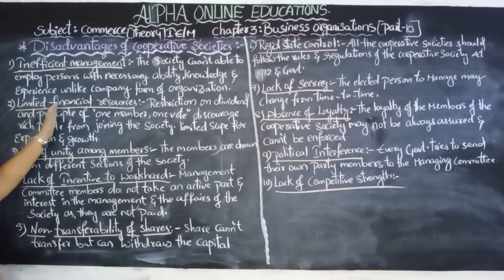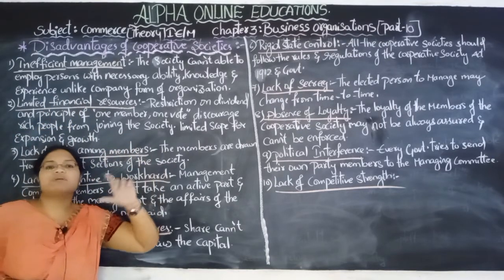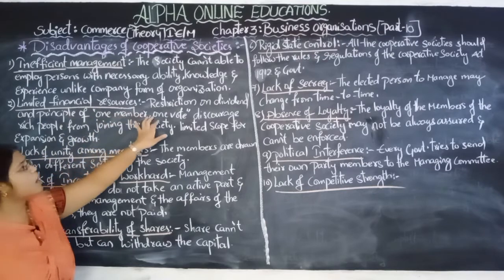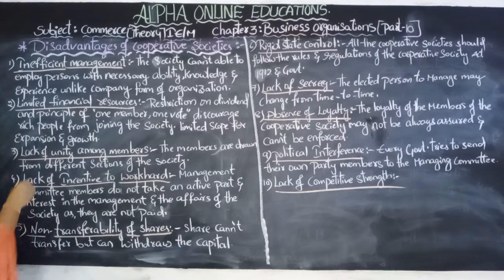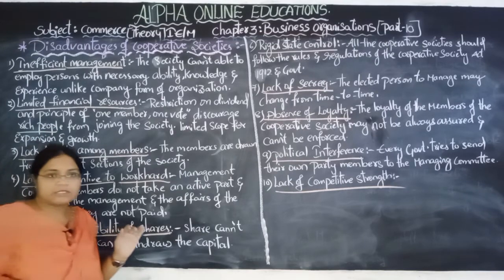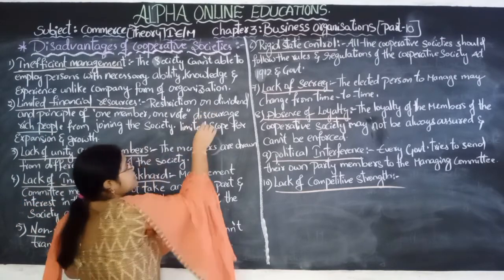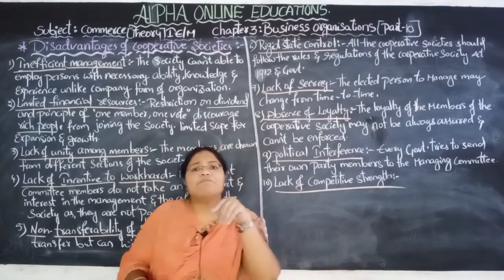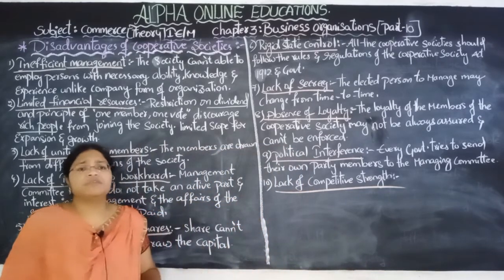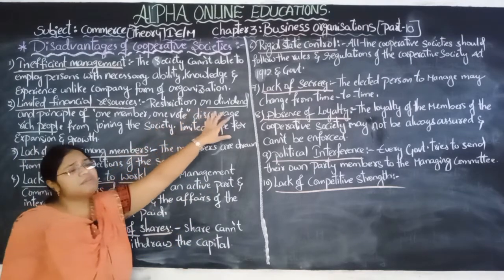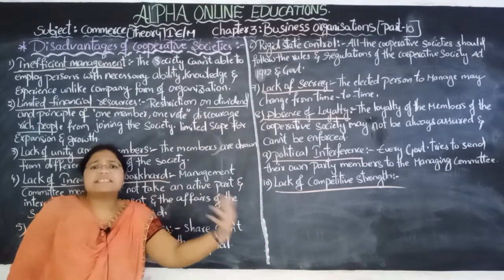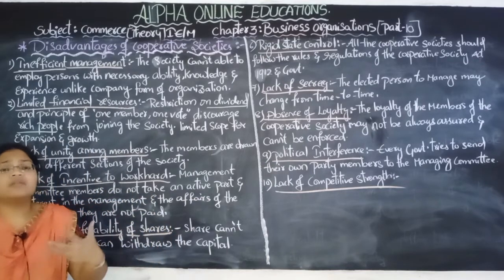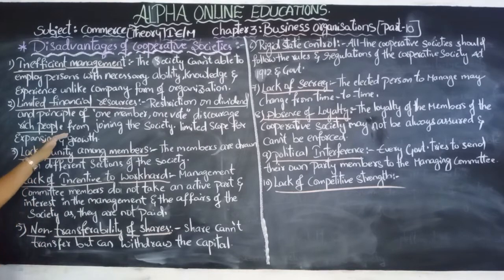The next disadvantage is limited financial resources. The cooperative society has very limited financial resources. Restrictions on dividend and the principle of one member one vote discourage rich people from participating in cooperative societies, because the dividend is limited, and rich people are not interested to invest in cooperative societies due to this discouragement.